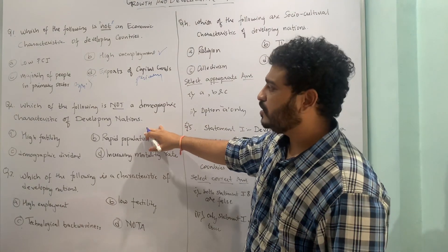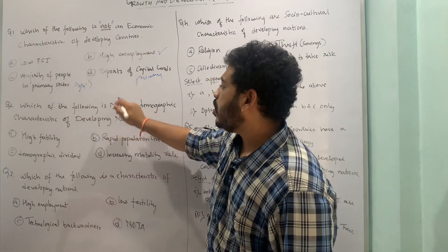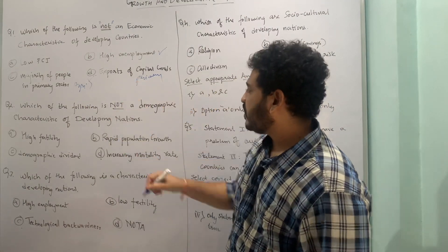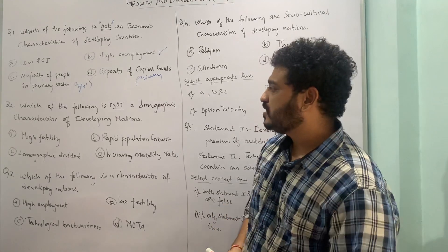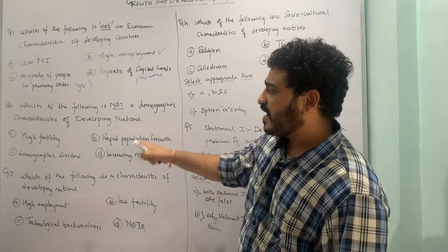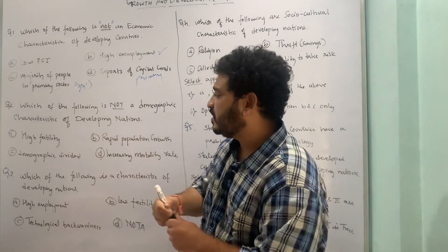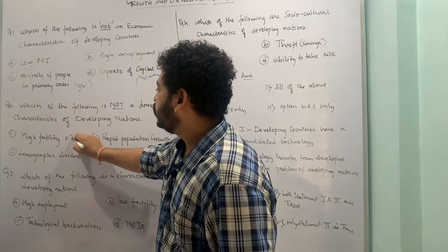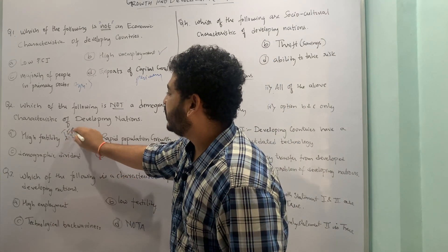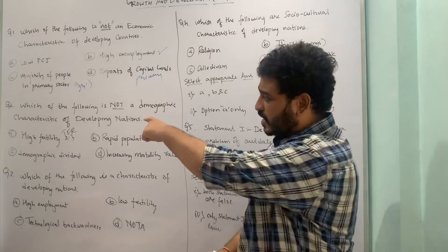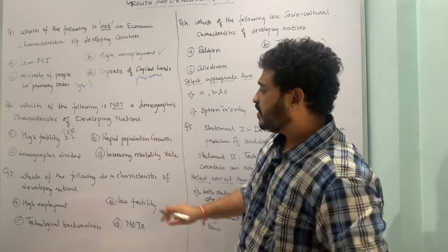Let us move to the second MCQ: which of the following is not a demographic characteristic of developing nations? We have high fertility — yes, this is a problem. In India, the total fertility rate is around 2.3, so high fertility rate is a characteristic.